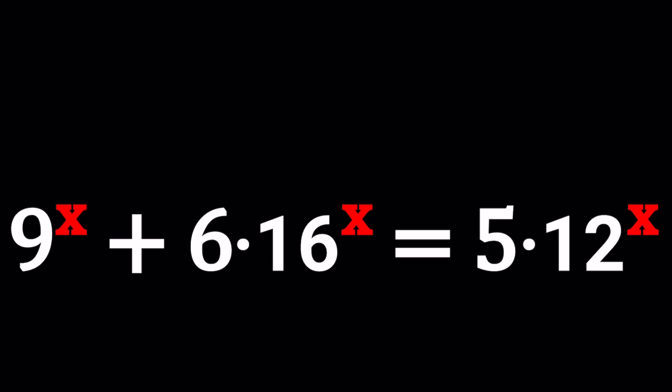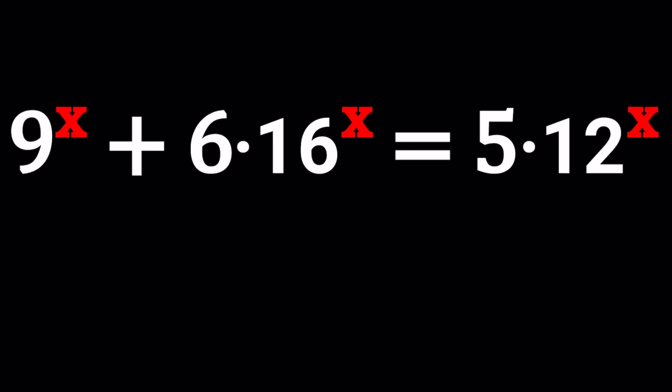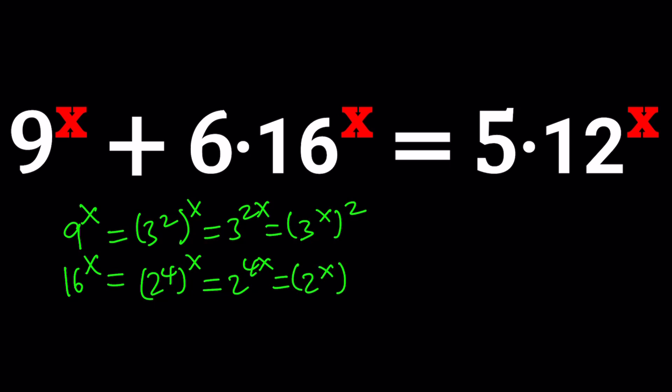I'll be presenting different approaches and let's start with the first one. First I'm going to write 9 to the power x as 3 to the second to the power x which is 3 to the power 2x which can be written as 3 to the power x squared. I'm going to do the same thing for 16 to the power x. Write it as 2 to the 4th to the x and then that is 2 to the x to the 4th power.